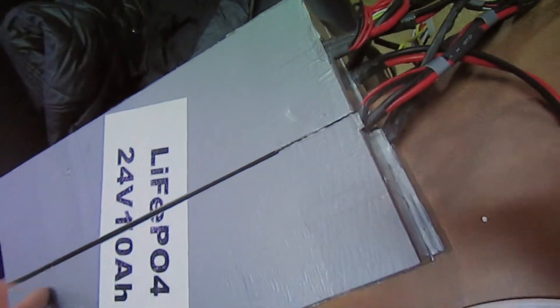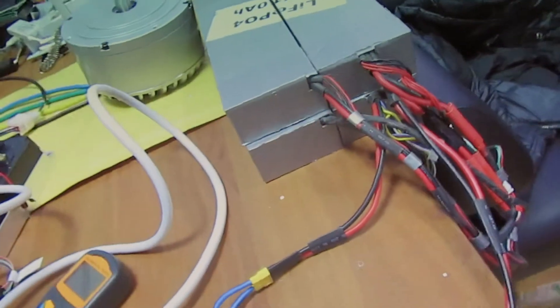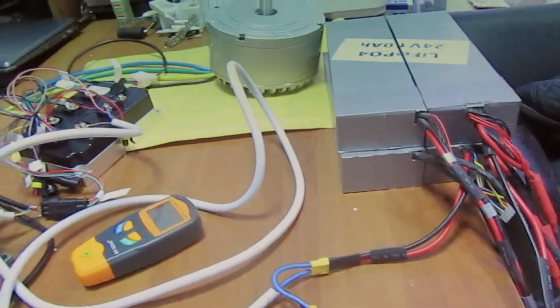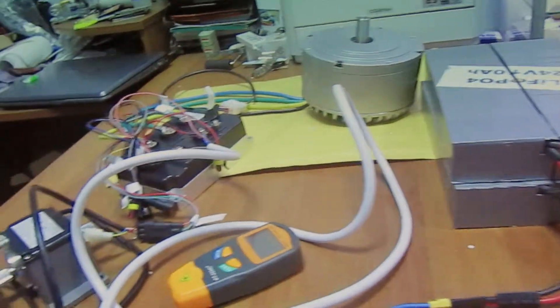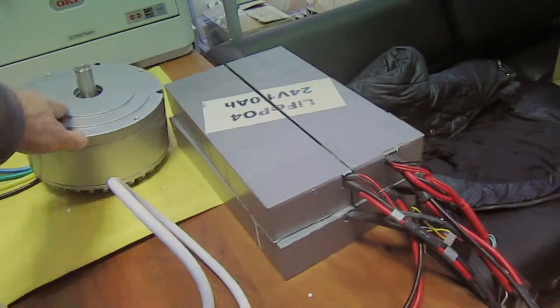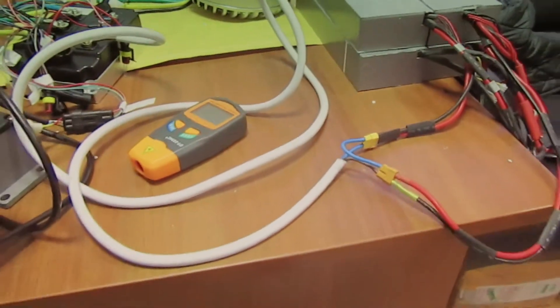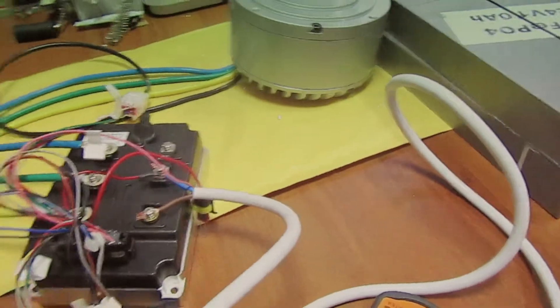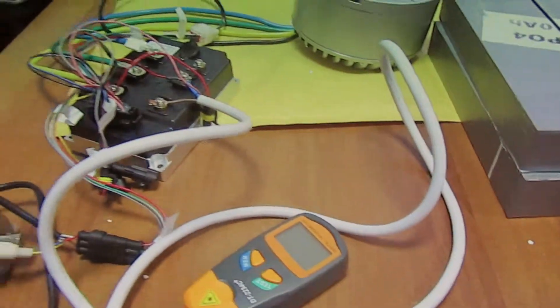LiPo batteries at 25 volts each, and we've combined them together to get 48 volts. The motor is rated for 72 volts, but our battery is 48 volts. Will it work or not? That is the question. Let's check.